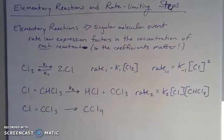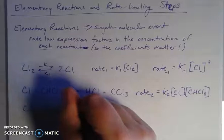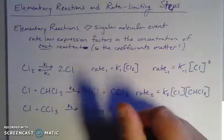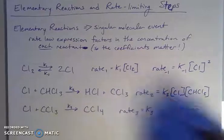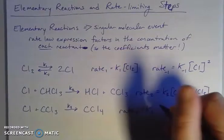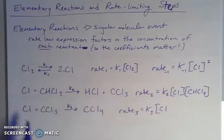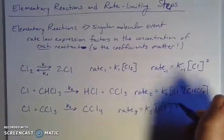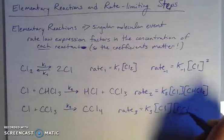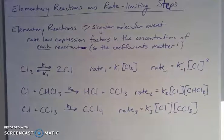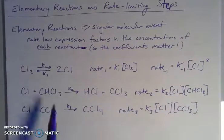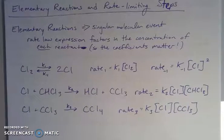Now let's look at the third one — k₃. The rate of this process is equal to some constant k₃ times the concentration of my chlorine atom times the concentration of my carbon trichloride (CCl₃), one to one, so we raise these to the first powers. These two would be bimolecular processes because there are only two reactants each.